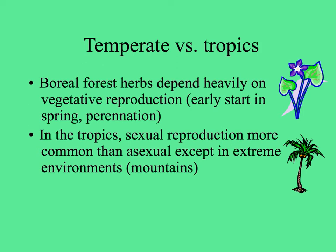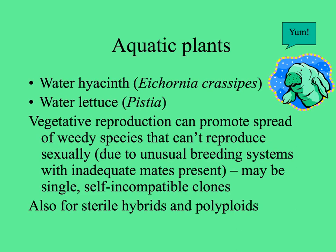In the tropics, sexual reproduction is generally more common than asexual, except in more extreme environments like those at higher elevations. Aquatic plants can also reproduce a lot by vegetative reproduction — two major aquatic invasives, the water hyacinth and water lettuce, have spread and proliferated through clonal vegetative growth, and a lot of the clogging of waterways has been found to be done by this clonal growth if there aren't enough manatees around to eat them.